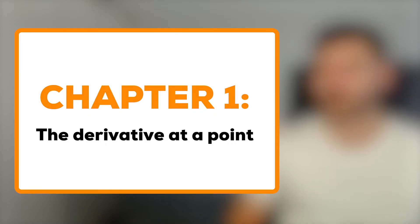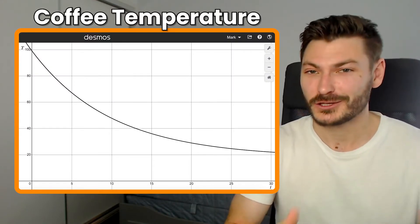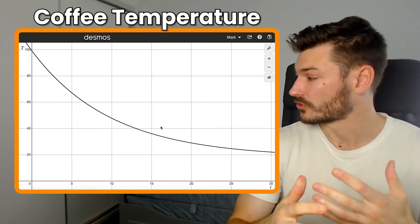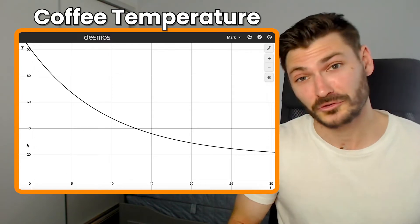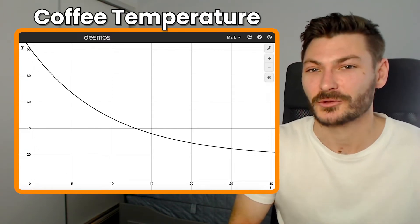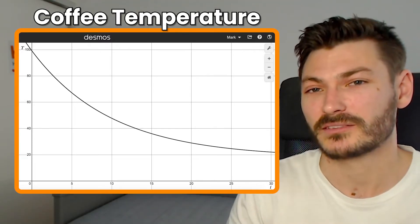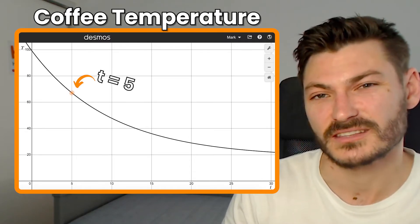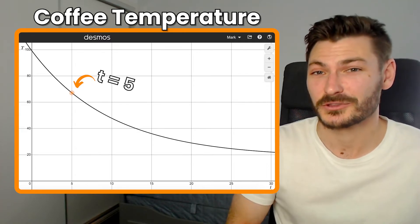The Desmos file is fully interactive — you can move the dots around and play with it, and there are instructions in the side panel, so check that out as well. Here I have a curve which represents the temperature of a coffee cooling down over time. My horizontal axis is t for time in minutes, and my vertical axis is T for temperature in degrees Celsius. The first thing we want to do is plot a couple of points on this curve — one at five minutes and one at 20 minutes.